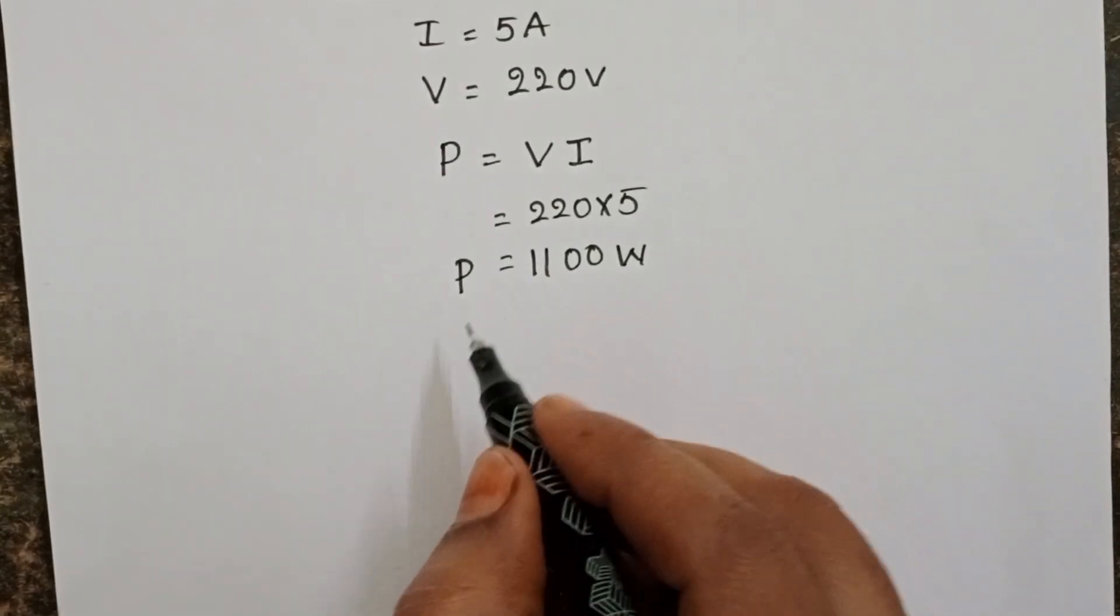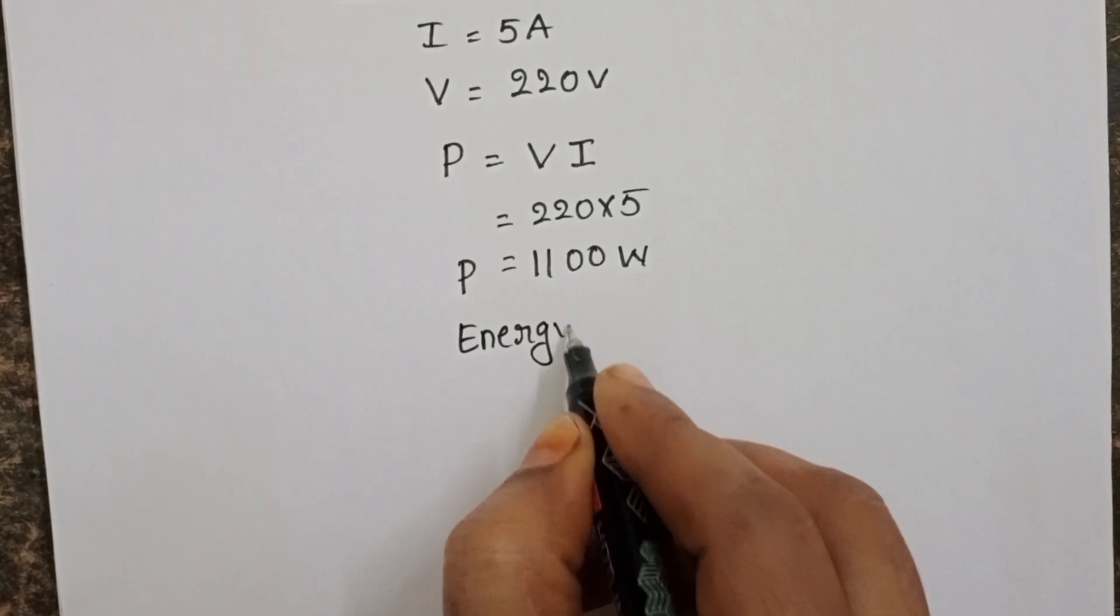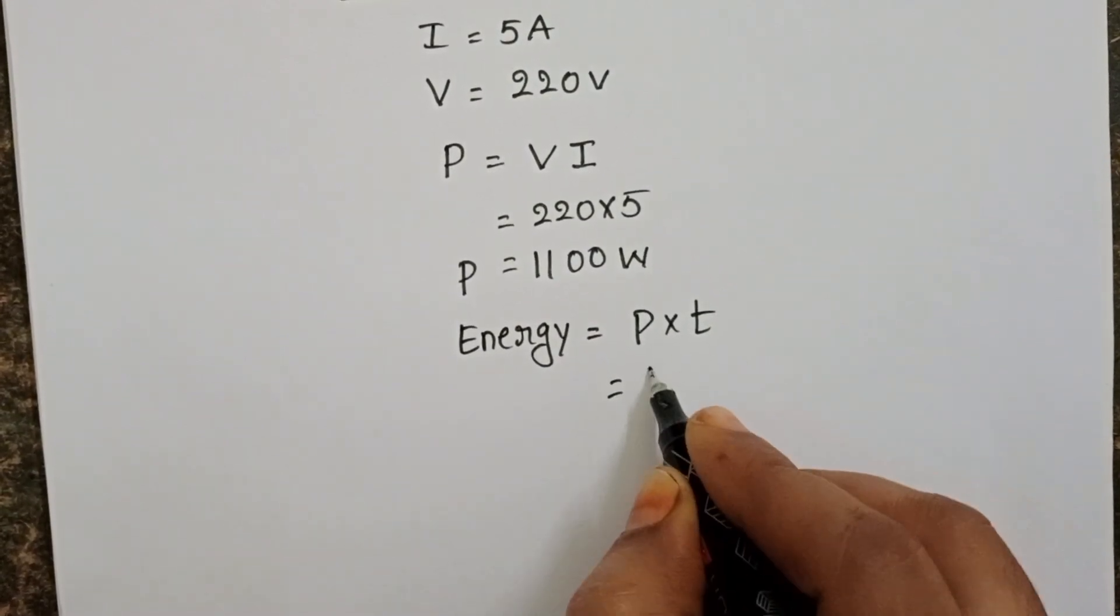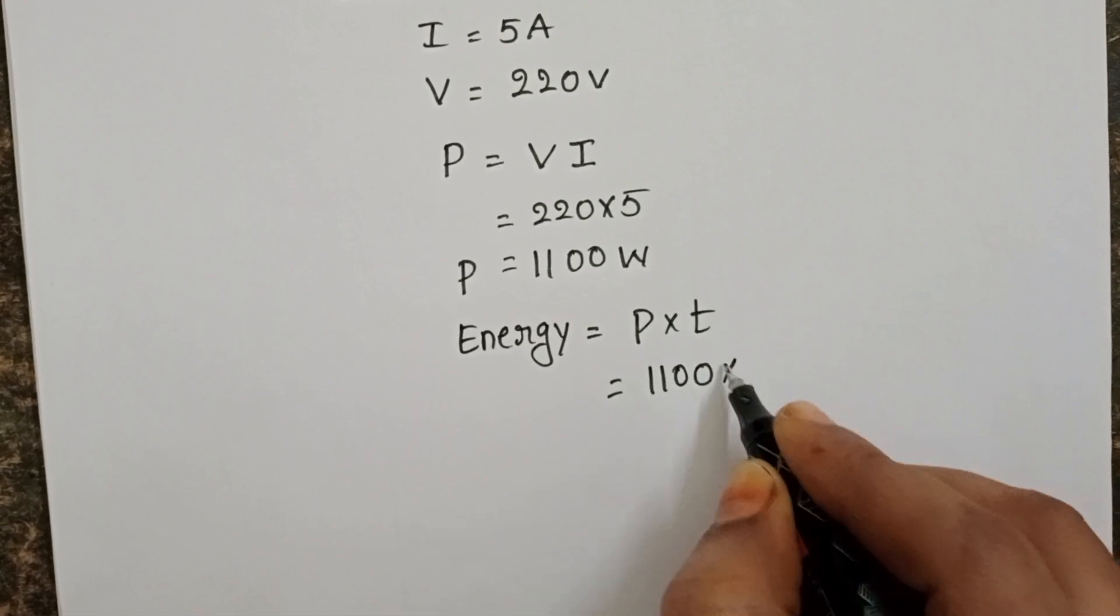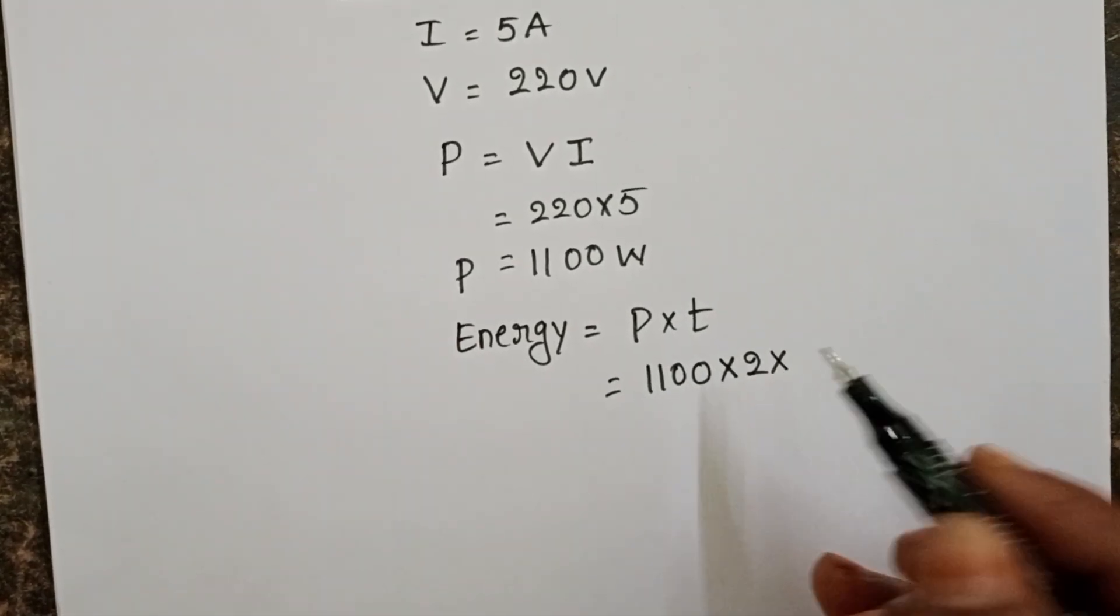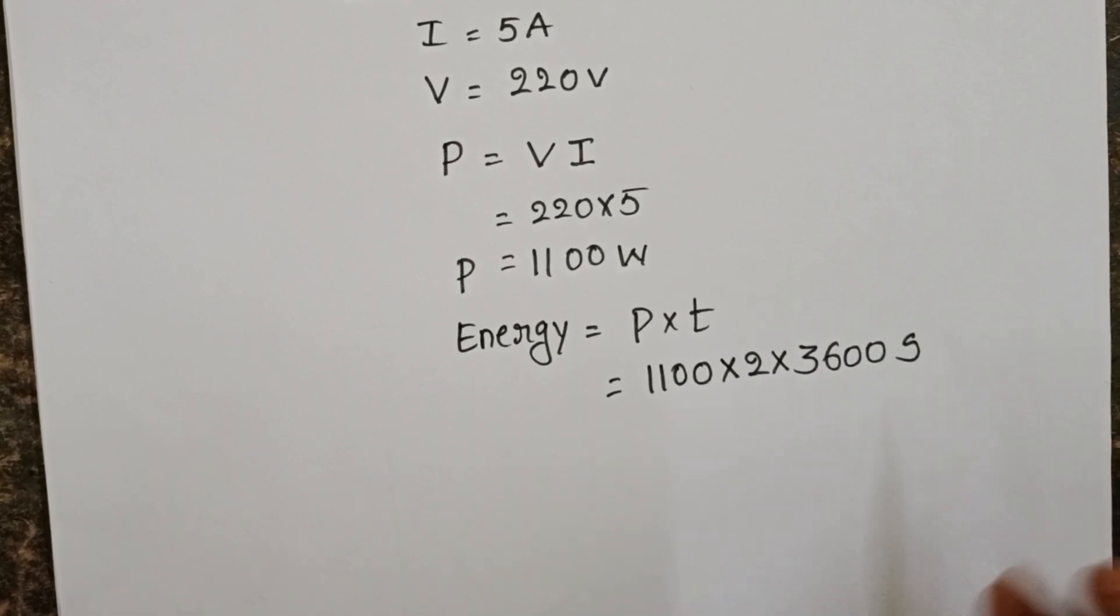Next, we want energy consumed by the electric motor. Energy is equals to power into time. Power is 1100 watts and the given time is 2 hours. Convert 2 hours into seconds: 2 into 3600 seconds.